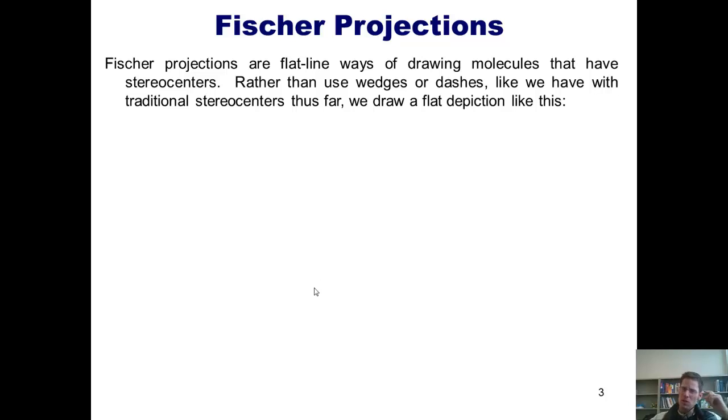Simply put, Fischer projections are flat-line ways of drawing molecules that have stereocenters. Rather than use wedges and dashes like we have with traditional stereocenters so far, we draw a flat depiction like this one. You may be looking at this structure and wondering, how could this flat drawing possibly represent a traditional 3D structure like the ones that we've typically been drawing using wedged and dashed lines? Well, I'm glad you asked that question.